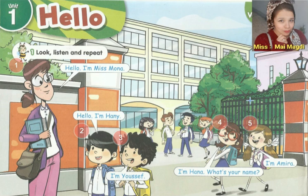So when someone asks you 'What's your name?' — اسمك إيه؟ — you answer with 'I am' or 'My name is' followed by your name. For example: I am Amira. I am Miss May. I am Yusuf. I am Hany.